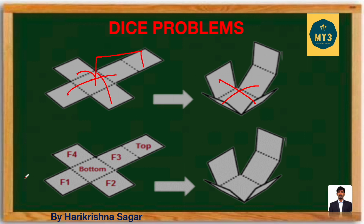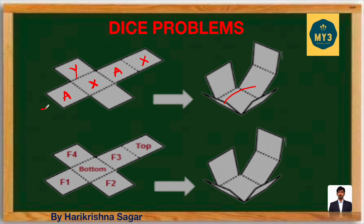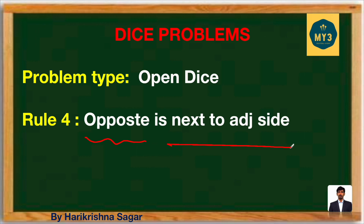The key rule for unfolded dice: for any particular face, the immediately next face is adjacent, and the face next to that adjacent is the opposite. So opposite is defined as next to adjacent — skip one face to find the opposite. Whatever die (unfolded paper) you have, to find the opposite, just find the face that is two steps away (next to adjacent).